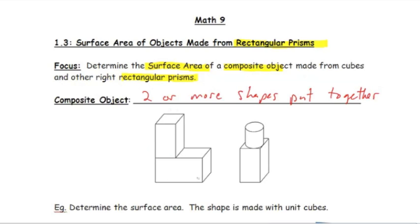This example on the left is showing two rectangular prisms. Let's draw a little dividing line here. This is what we'll talk about today where we have composite objects made from cubes and rectangular prisms. And the next video we'll look at adding in cylinders and triangular prisms.